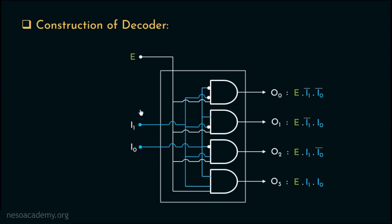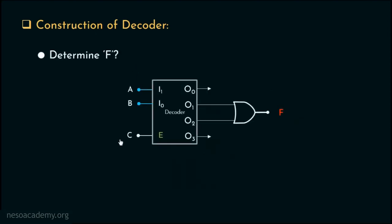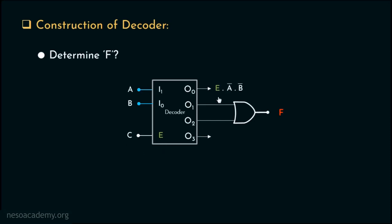The answer is that during implementation, E is sometimes considered as an input line. Consider this combinational circuit — we are to determine the function F. This is a 2-to-4 decoder and an OR gate is attached to the output lines O1 and O2. Along with inputs A and B, which are given to the decoder through the I1 and I0 input lines respectively, the input C is fed through the enable line. So O0 is E·Ā·B̄, and since C is being fed through the enable line E, it is actually C·Ā·B̄.